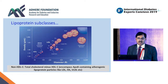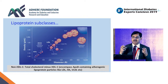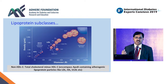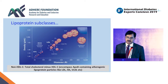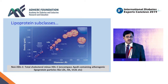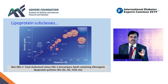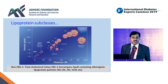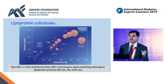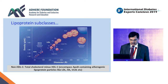HDL, the high-density lipoprotein, has the smallest size but has the highest density, and is supposed to be extremely protective for cardiovascular disease. As size increases we have LDL, IDL, triglycerides, chylomicrons and so on. Within LDL cholesterol, it is the density that is vitally important. Large buoyant LDL particles are not as injurious to the vascular endothelium as small dense LDL particles are.